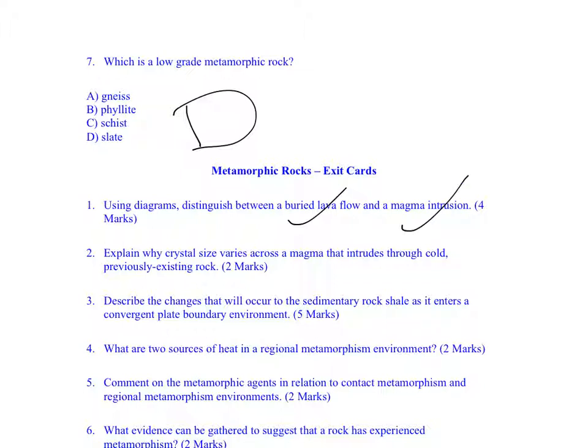Move on to number three: describe the changes that will occur to sedimentary rock shale as it enters a convergent plate boundary. The biggest thing with this particular question is that you understand that in a convergent plate boundary you actually get the process of subduction.